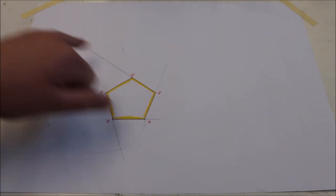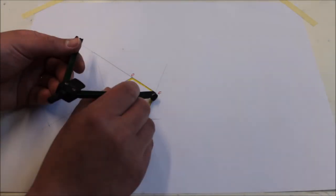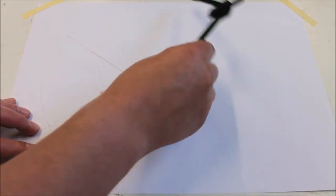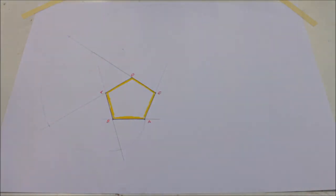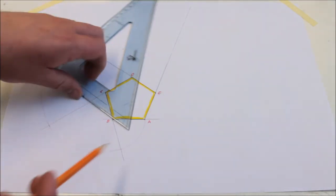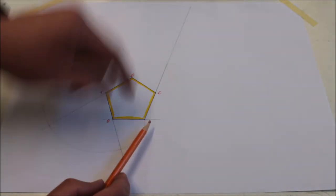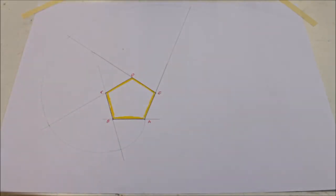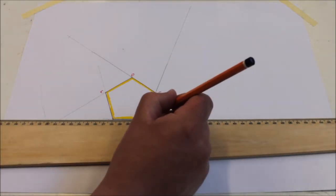Same thing again, pin at E, lead at the end here. And now the last pivot point is back at A, pin at A, lead out here, swing it down and extend out that line, base line AB.